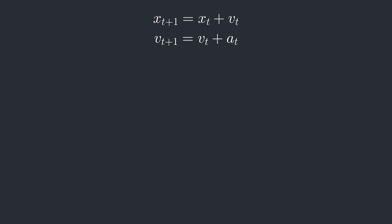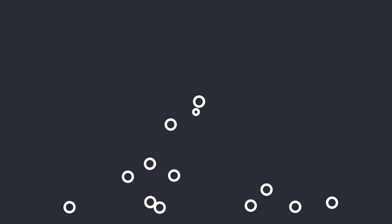It seems we've lost our point, so let's just rewind time and handle collisions properly. Whenever the point hits the ground, we'll flip the velocity in the y-axis, and when it hits the sides, we'll flip the velocity in the x-axis. Finally, to prevent the point from bouncing around forever, we'll dampen the velocity by one percent each time step. Now we have a nice bouncing ball simulation that we can even add multiple points to.